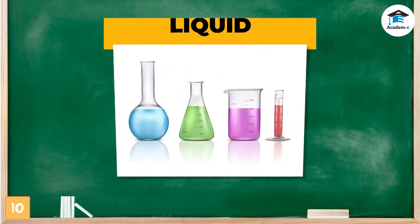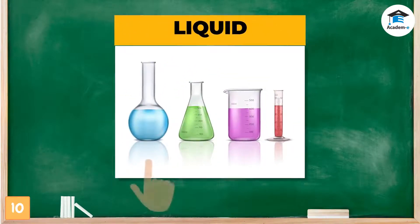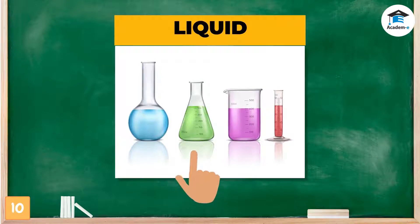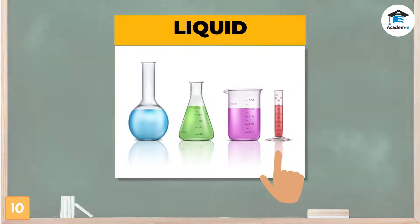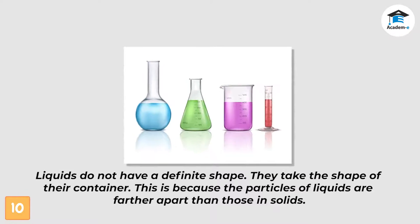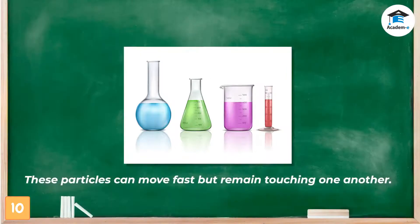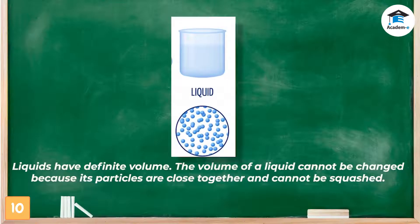Look at the liquids in different containers. What is the shape of the liquid in the first container? How about the liquid in the second container? How about the liquid in the third and fourth containers? Liquids do not have definite shape — they take the shape of their container. This is because the particles of liquids are farther apart than those in solids. These particles can move fast but remain touching one another. Liquids have definite volume; the volume of a liquid cannot be changed because its particles are close together and cannot be squashed.